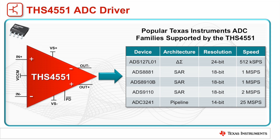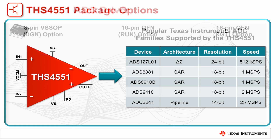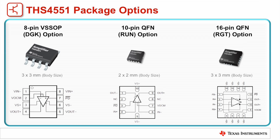The THS4551 has been designed to drive a number of other popular TI ADCs. Some of the more common devices in addition to the ADS127-L01 include the 18-bit 1-megasample-per-second ADS8881 and the ADS8910B SAR ADCs, the 18-bit 2-megasample-per-second ADS9110 SAR ADC, and the high-speed 14-bit 25-megasample-per-second ADC3241 pipeline ADC.